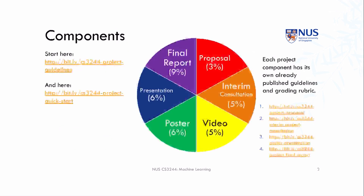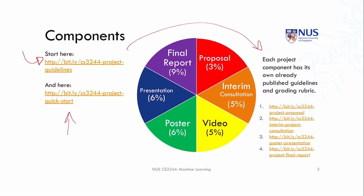Just like the normal part of the course, the project component has its own subcomponents. The nice thing is there's already a lot of documentation prepared from previous semesters. The most important part is to start with the project guidelines document, which contains all the rubrics for all components. If you have a hard time getting started, our TAs have compiled a quick start guide to help you make key decisions about your project right from the beginning.